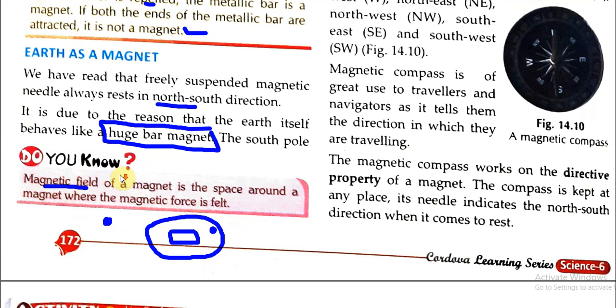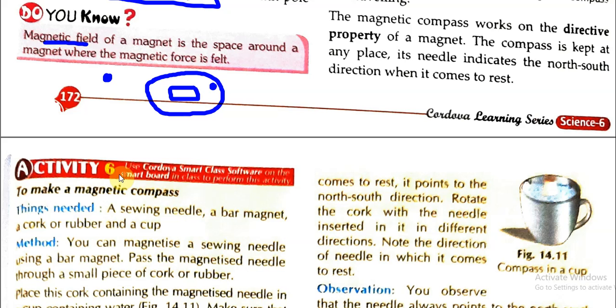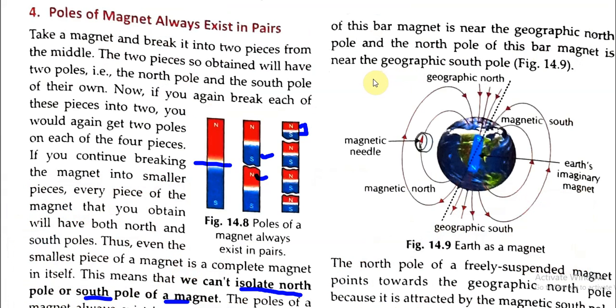The south pole of Earth's bar magnet is near the geographical north pole, and the north pole of Earth's bar magnet is near the geographical south pole.